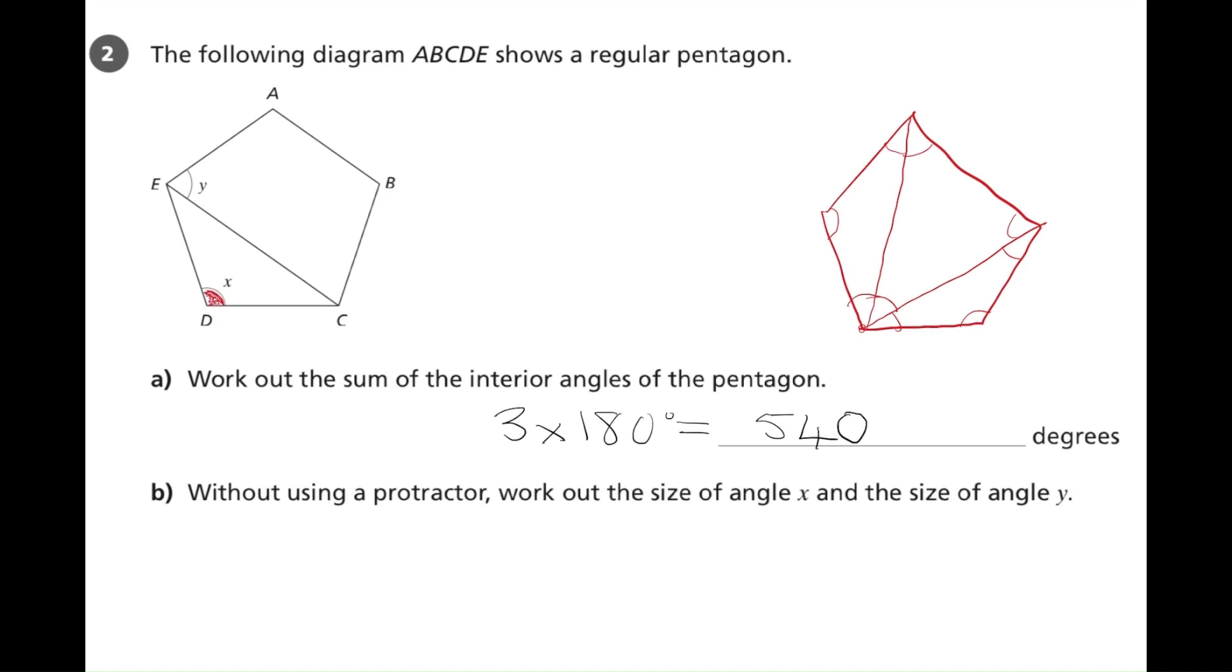So the value of x must be the 540 that we just worked out, divided by 5 because there are five interior angles, and this gives x a value of 108 degrees.